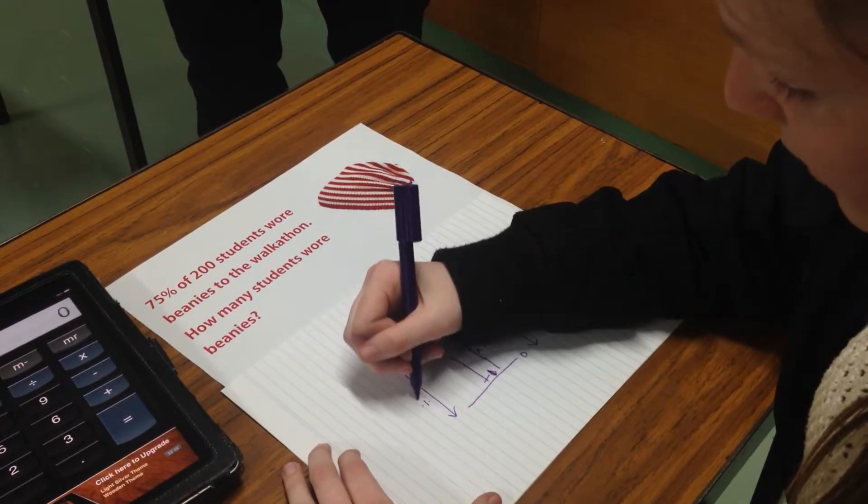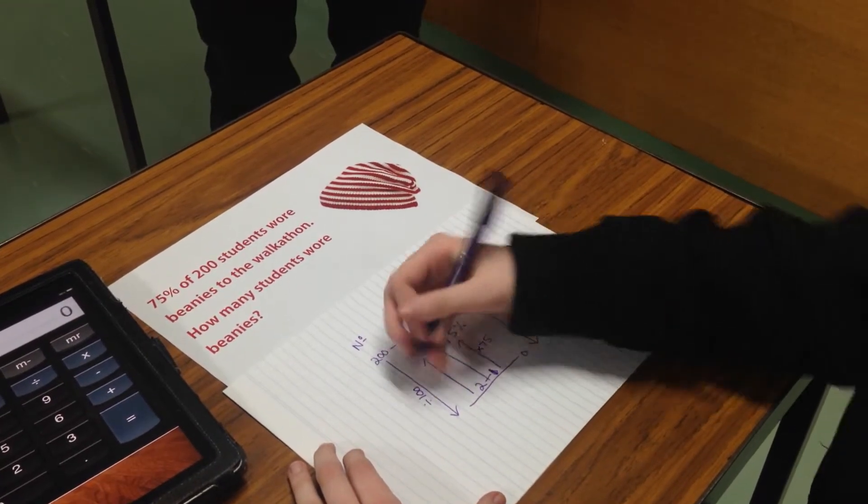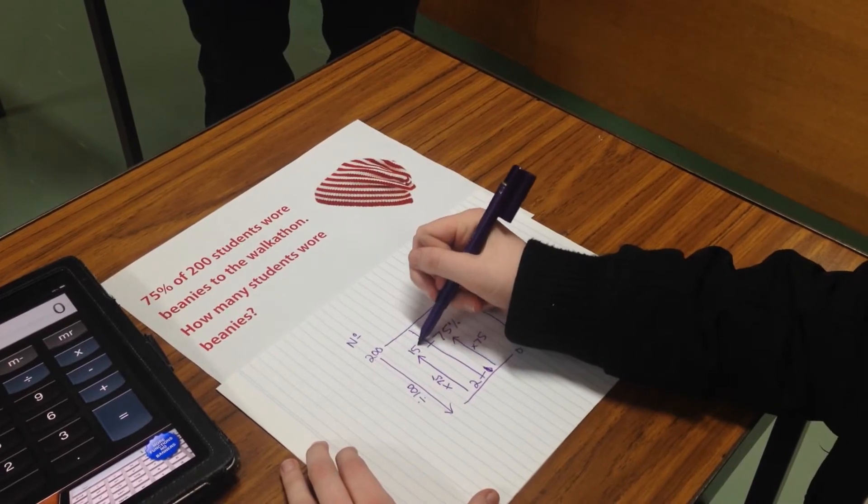200 divided by 100 equals 2, then 2 times 75, which gives you the answer: 150 students.